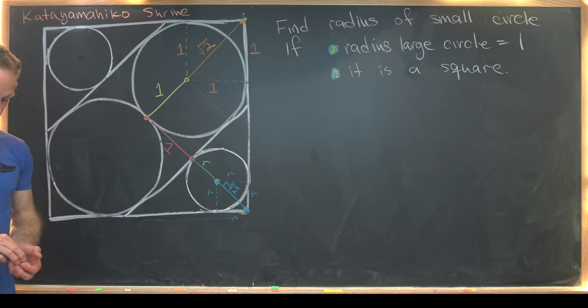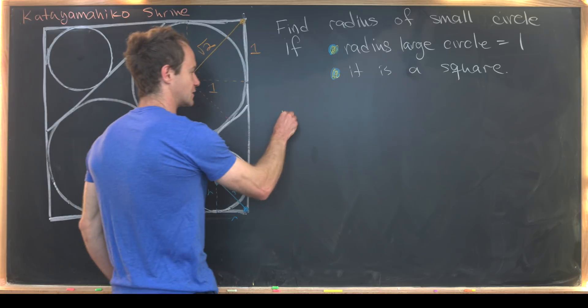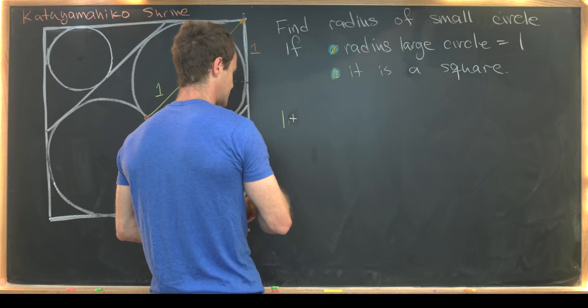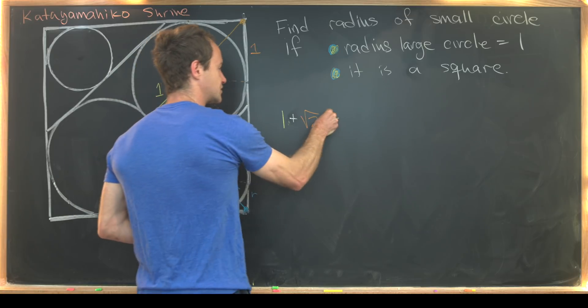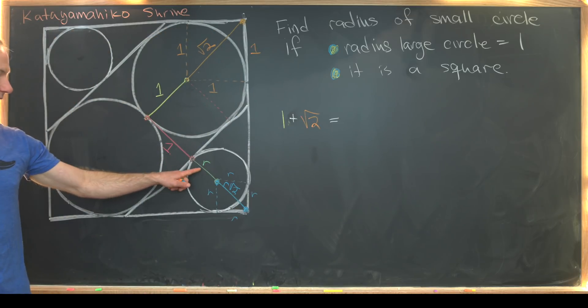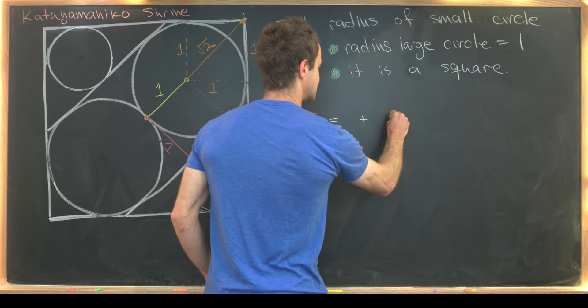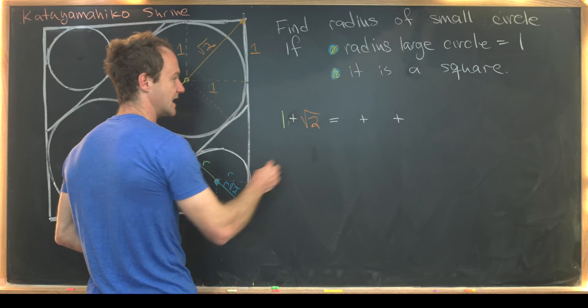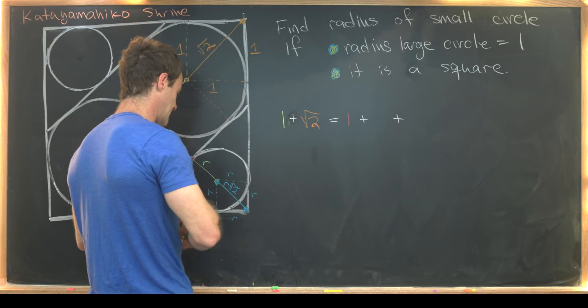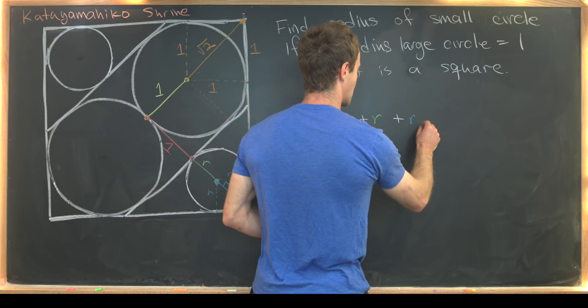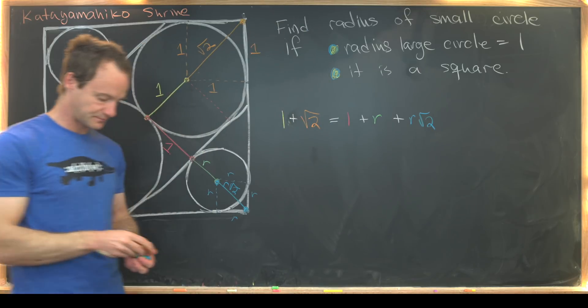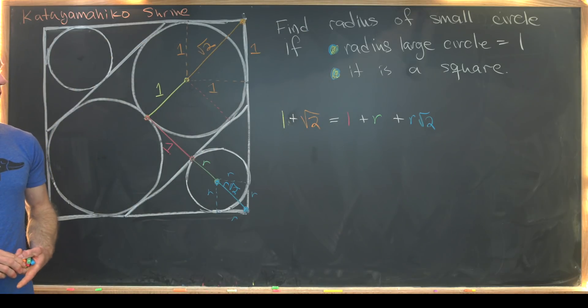Okay, so now we're ready to add everything up. So again, yellow plus orange, that's 1 plus square root of 2, will be equal to red plus green plus blue. So let's get that in there. Red is going to be 1, green is going to be r, and then blue is going to be r times the square root of 2.